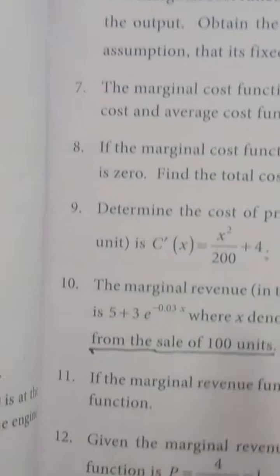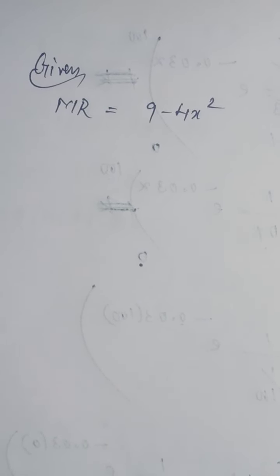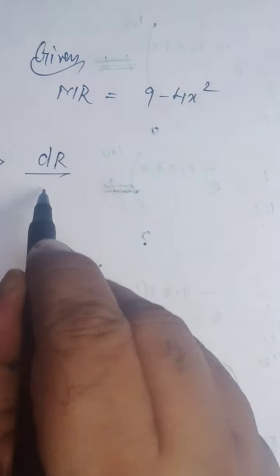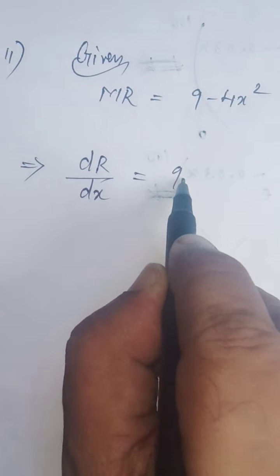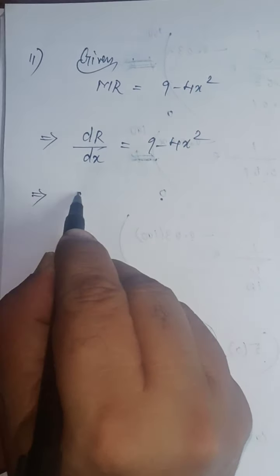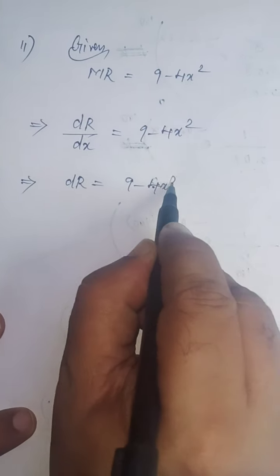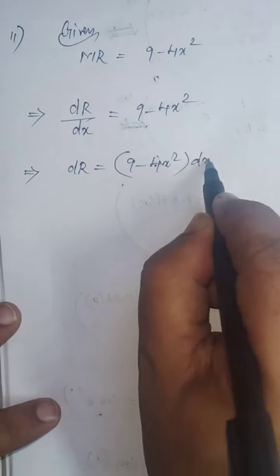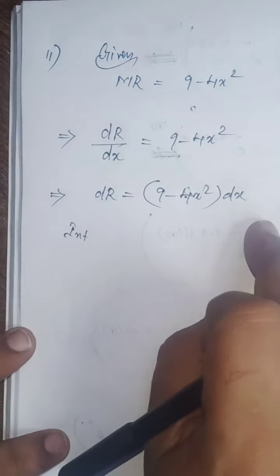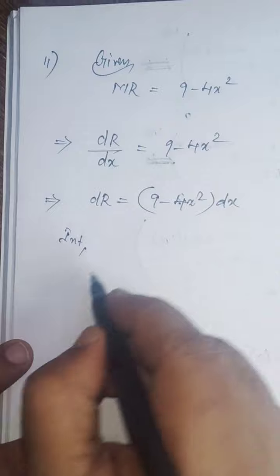Okay, MR is given. MR = 9 - 4x². MR and dR/dx are the same, so dR/dx = 9 - 4x², which implies dR = (9 - 4x²)dx. Just cross multiply. Once the variables are separated, we have to integrate on both sides.